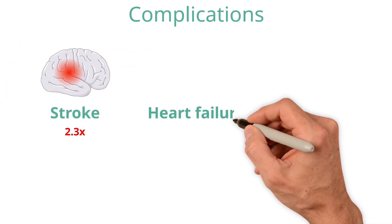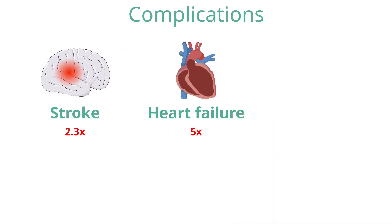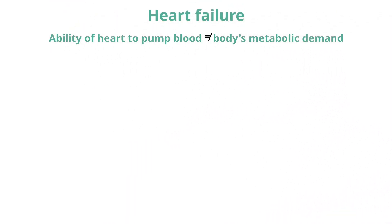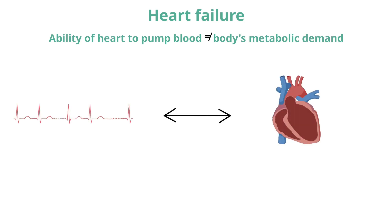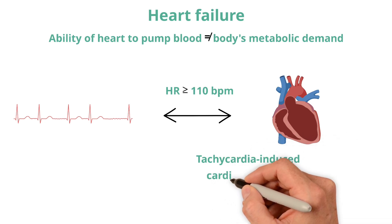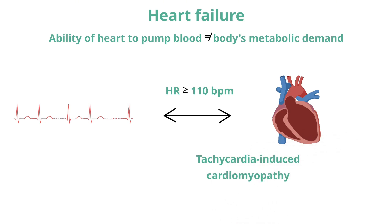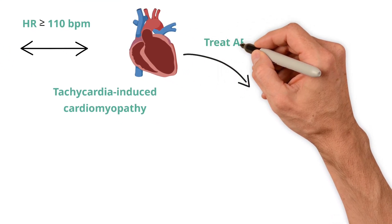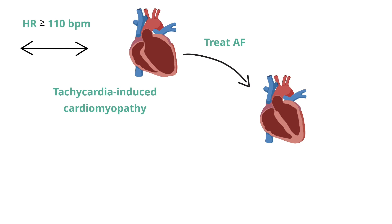AF increases the risk of developing heart failure by around five times. Those who persistently have fast atrial fibrillation with a heart rate greater than 110 beats per minute have an increased risk of developing tachycardia-induced cardiomyopathy, or tachycardiomyopathy — reflecting the fact that the heart does not tolerate chronically beating above 110 beats per minute. Fortunately, tachycardia-induced cardiomyopathy is often responsive to rate-slowing medications or converting the patient to sinus rhythm.